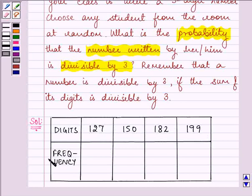The frequency of this is given to us as, let's say 5, 7, 3 and again 5. If we have chosen any student from the room at random, let's say we have chosen a student from the class which is writing down number 150.